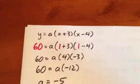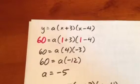Which means 60 equals A times negative 12, which means A equals negative 5.